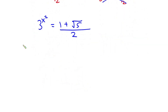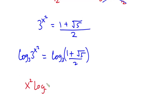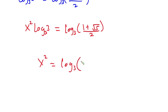Now let's take log in base 3 on both sides of the equation. So we have log base 3 of 3 to the power x squared equals log base 3 of (1 plus square root of 5) over 2. Moving x squared to the front, we have x squared times log base 3 of 3 equals log base 3 of (1 plus square root of 5) over 2. Since log base 3 of 3 equals 1, we have x squared equals log base 3 of (1 plus square root of 5) over 2.